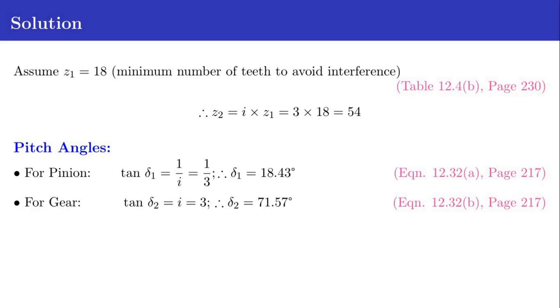Now the pitch angles: for pinion tan delta 1 equals 1 by i equals 1 by 3, therefore delta 1 equals 18.43 degrees. For gear tan delta 2 equals i equals 3, so delta 2 equals 71.57 degrees. The equations for pitch angles are provided in page 217 as equations 12.32A and 12.32B.